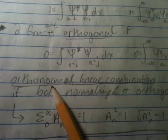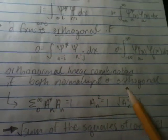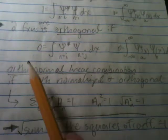Now, orthonormal linear combinations, that's if they're both normalized and orthogonal. If two functions are orthonormal, then the sum of their coefficients, squared here, will equal to 1.